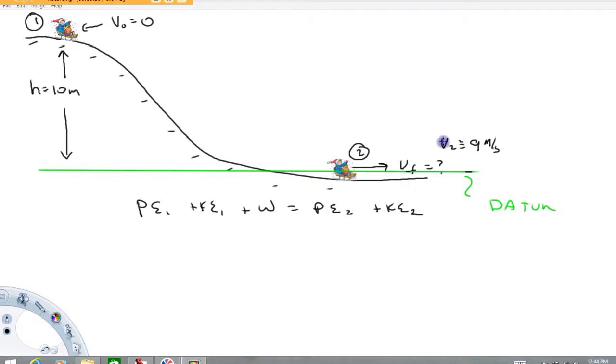So what we're going to do in this example is imagine that measurements show that the child ends up at 9 meters per second at the bottom of the hill. And what we're going to do here is try to estimate how much energy was lost due to these non-conservative forces such as friction and air drag. And then I'm going to discuss a little bit about what the effects are and where that energy went.